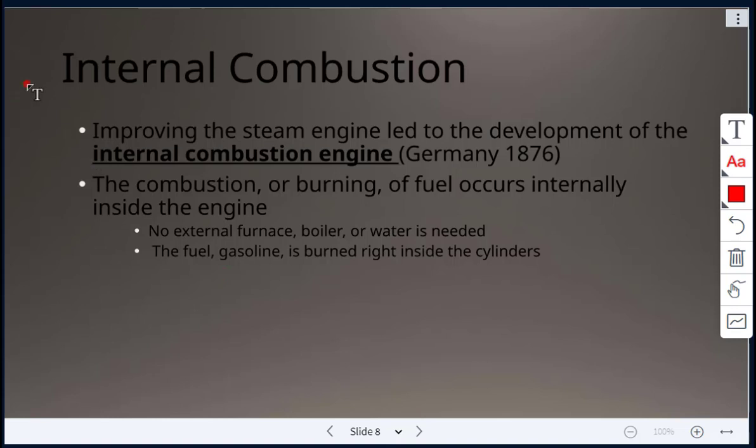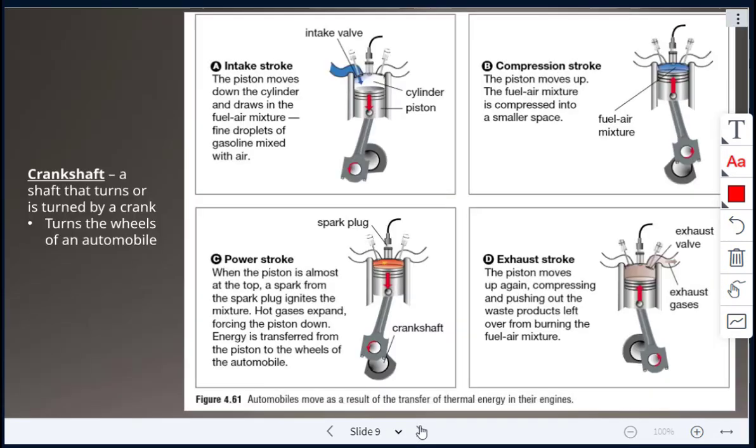Next, we'll talk about internal combustion. Improving the steam engine led to the development of the internal combustion engine. The combustion, which is the burning of fuel, occurs internally inside an engine. There's no external furnace boiler or water needed. The fuel or gasoline is burned right inside the cylinders. The crankshaft is a shaft shown here. It turns, or it's turned by a crank, and will then turn the wheels of an automobile.